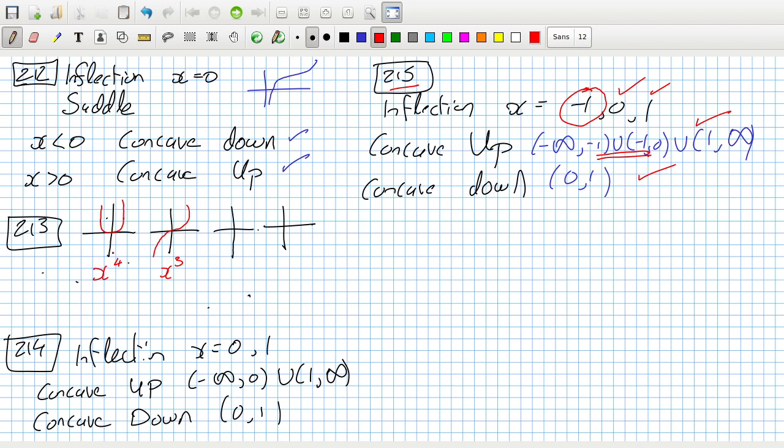So, that means we're kind of like an x to the fourth shape for the original function, which means we kind of have an x squared shape for the second derivative and an x shape for the first derivative. So, yeah, I get it now. No inflection. And it's concave up. Okay.